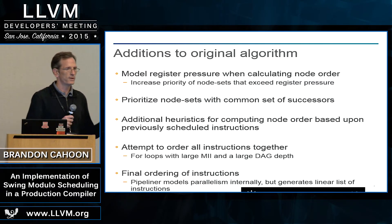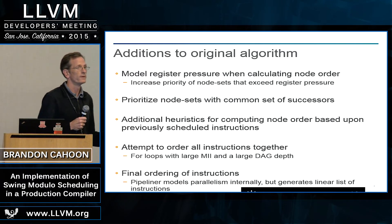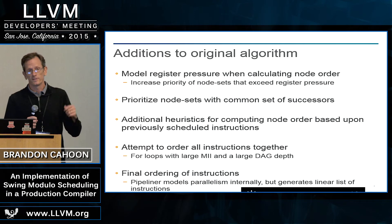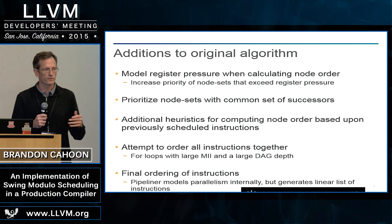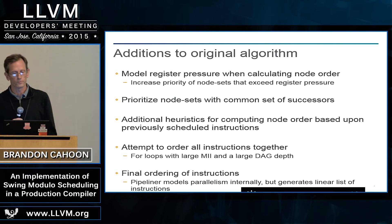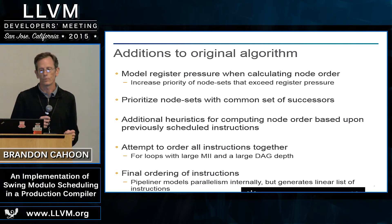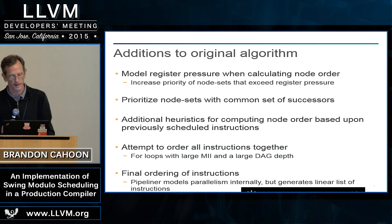We've made several additions to the algorithm in order to improve the number of loops that we were able to pipeline. A couple of these extensions deal with register pressure — we really want to prioritize node sets, which is a list of instructions that will increase your register pressure. We have several other heuristics that we've added to prioritize nodes based on different conditions discovered through tuning our software pipeliner.